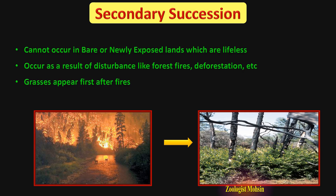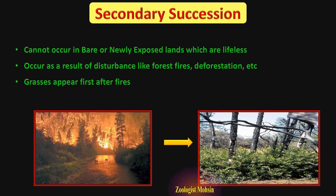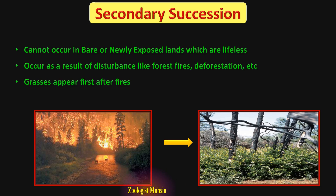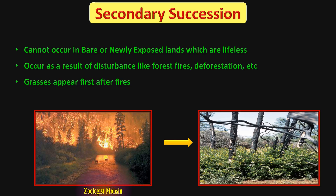Secondary succession is more rapid than primary succession and may reach a climax community in under 100 years. Grasses usually grow first, then higher plants start appearing along with shrubs, and nature restores itself with animal diversity developing side by side.